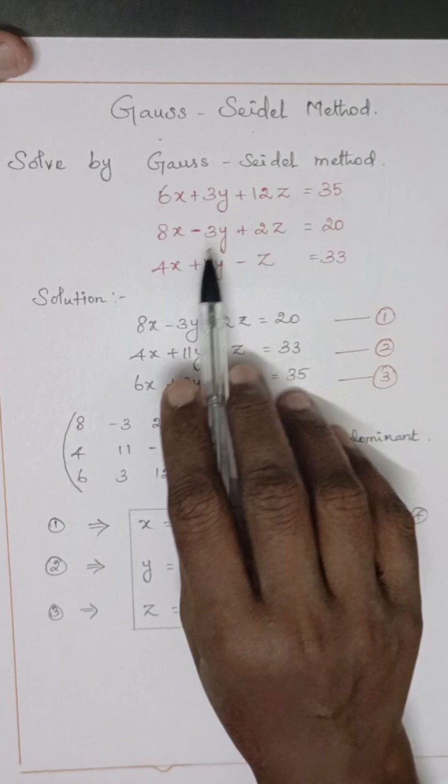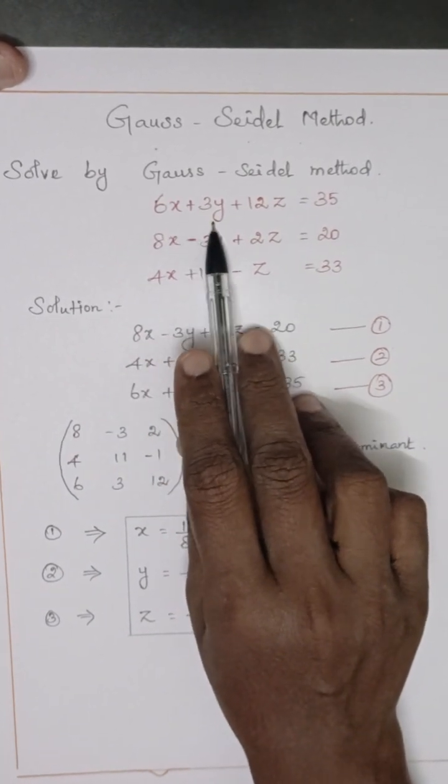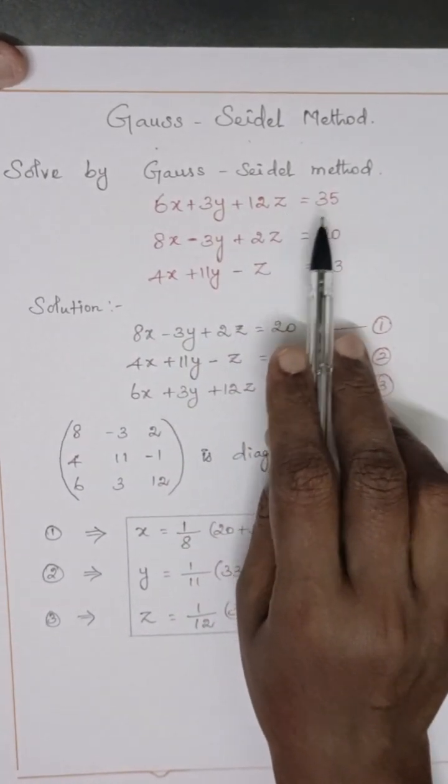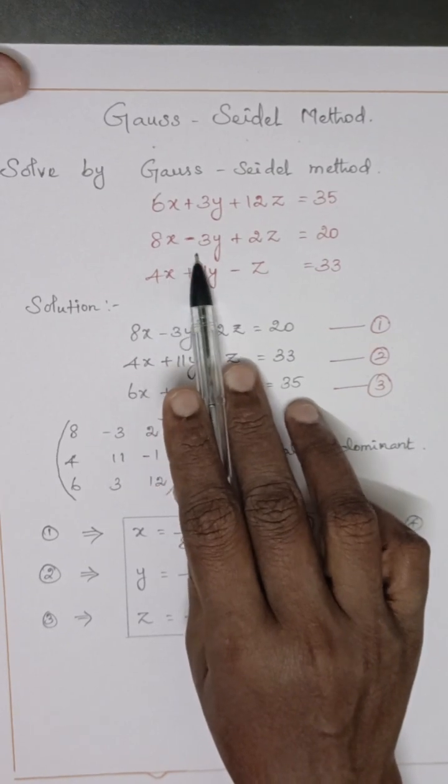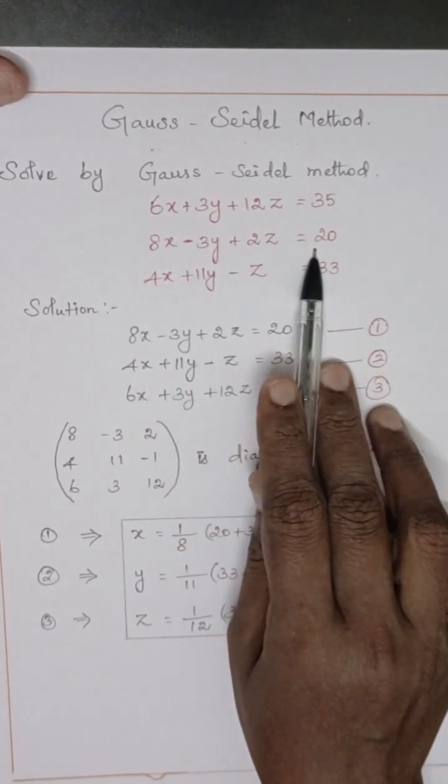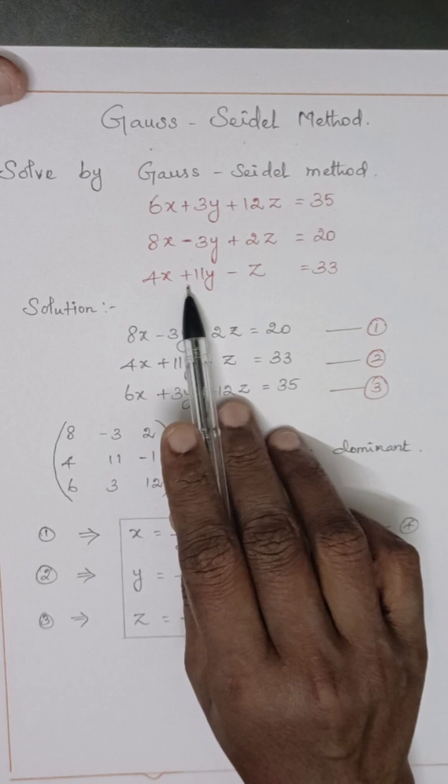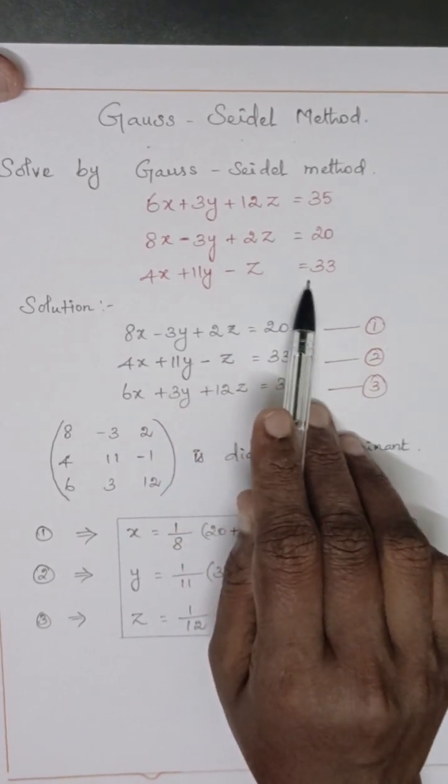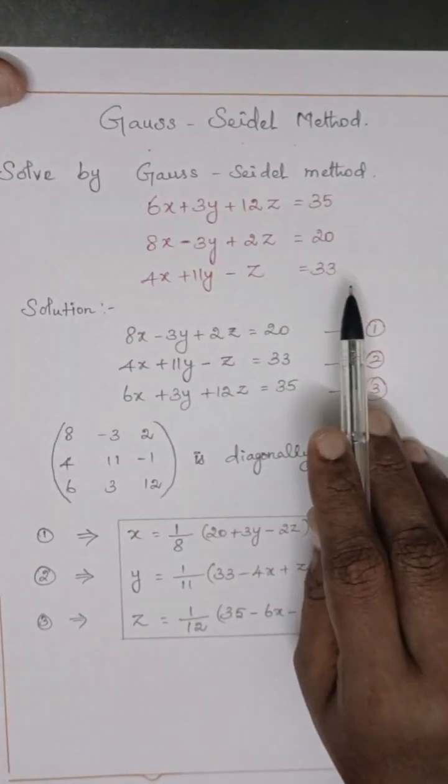Solve by Gauss-Seidel method: 6x plus 3y plus 12z equals 35, and 8x minus 3y plus 2z equals 20, and 4x plus 11y minus z equals 33. Three equations are there.